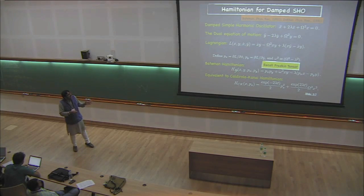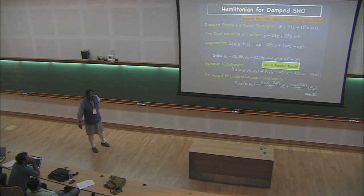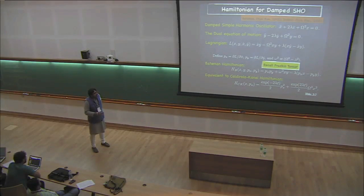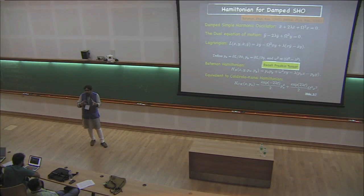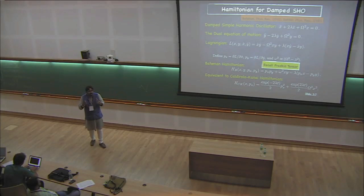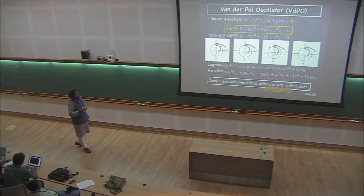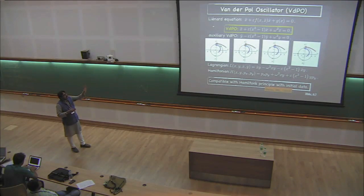How did Bateman come up with this Hamiltonian? It was almost trial and error. If I were to sit down and calculate, it's probably trial and error for me. There's no general technique. So then I thought, can I generalize this and somehow get a Hamiltonian for Van der Pol oscillator? Because then maybe I can do some quantum mechanics around it.